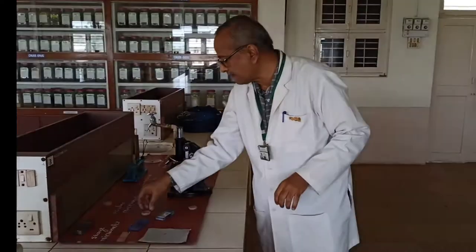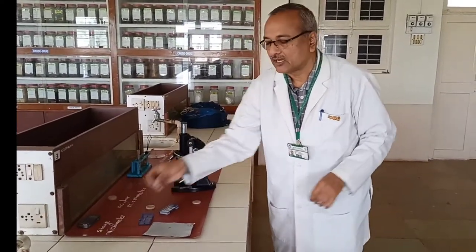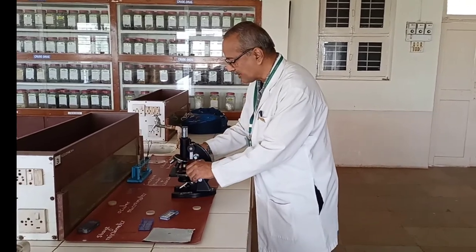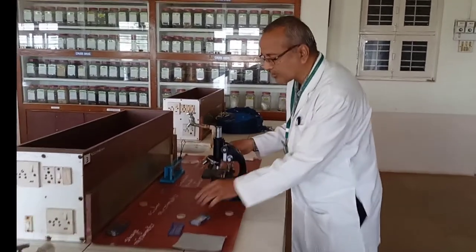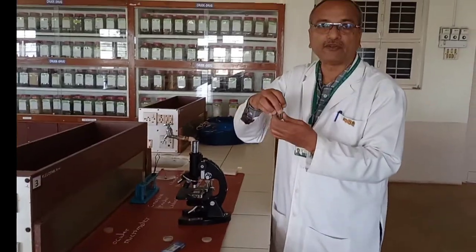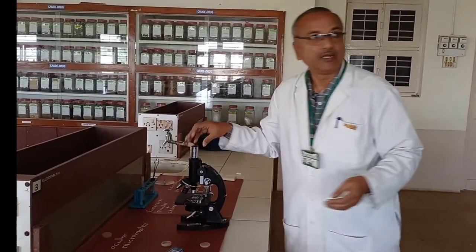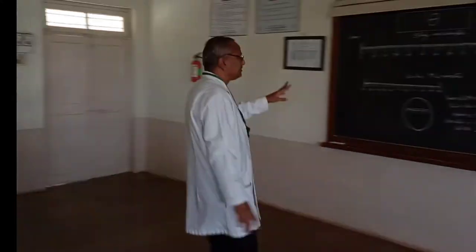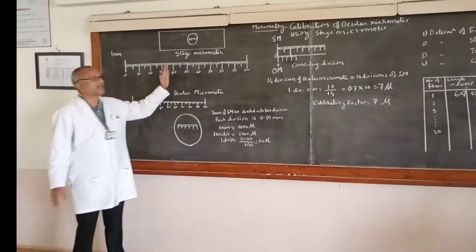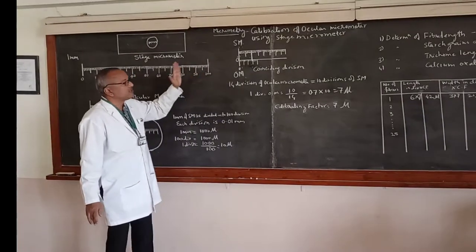The stage micrometer is to be placed on the stage of the microscope, and the ocular micrometer is to be inserted into the eyepiece of the microscope. Now let us come to the procedure — how we calibrate this ocular micrometer.